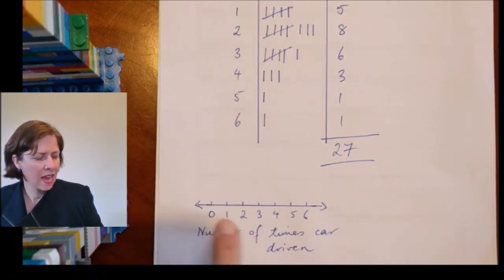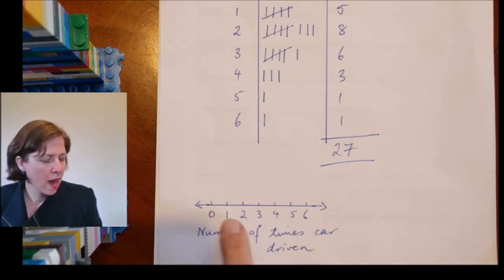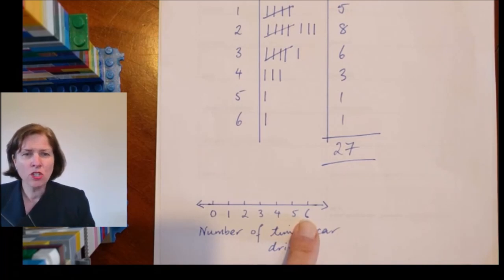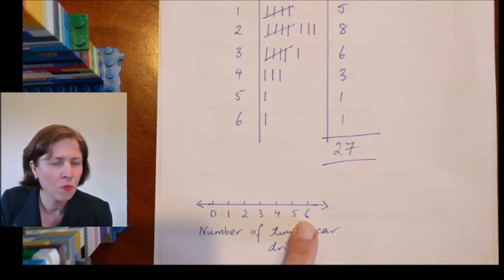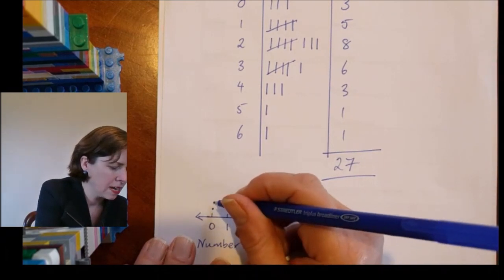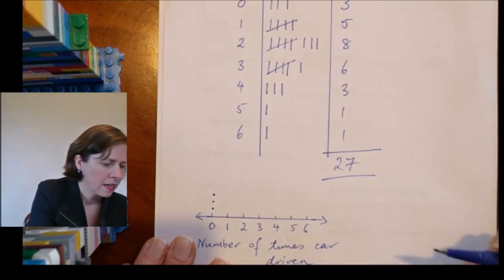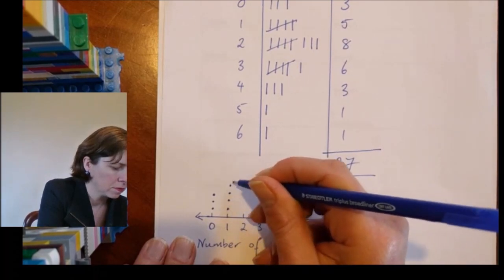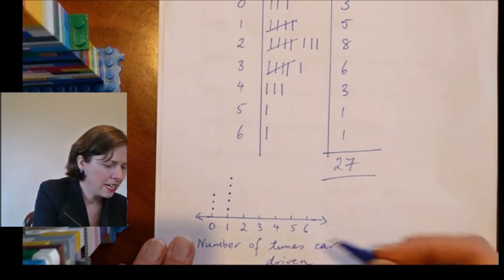If I didn't have numbers here and I had categories, I could write that, but as it is I've got numbers and they count for my categories. So then my dot plot is really just like another way of doing a tally. How many zeros did I get? I've got three. Next to one, I've got five. I've got eight twos.